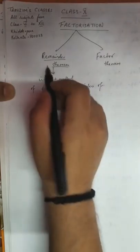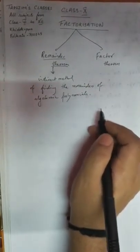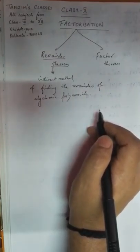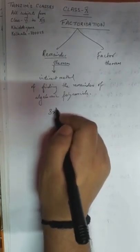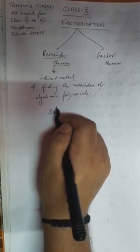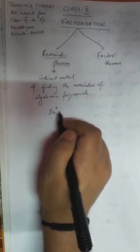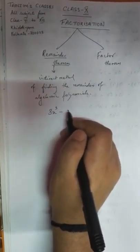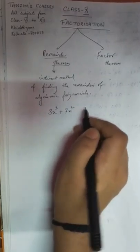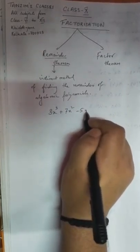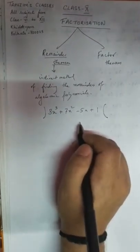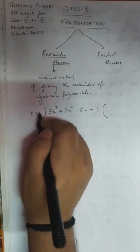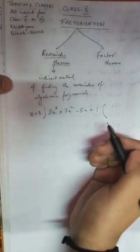Let's understand the remainder theorem by taking an example. In class 6 or 7 we have studied how to divide an algebraic polynomial. For example, if somebody asked me to divide 3x³ + 7x² - 5x + 1 by x + 3.